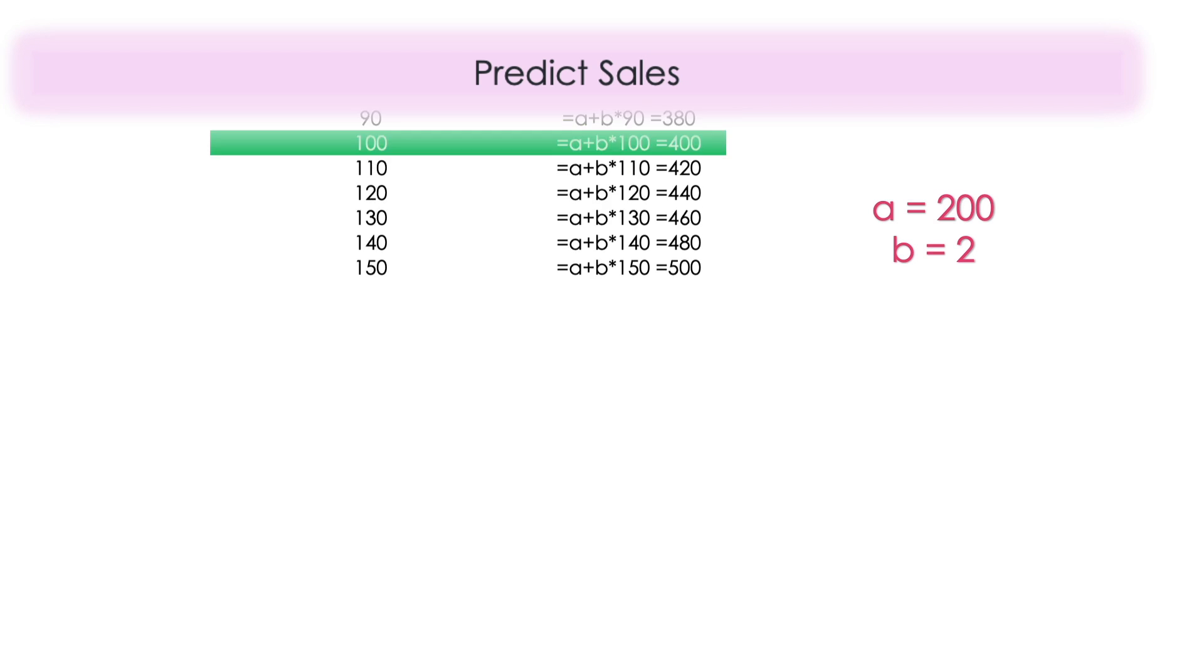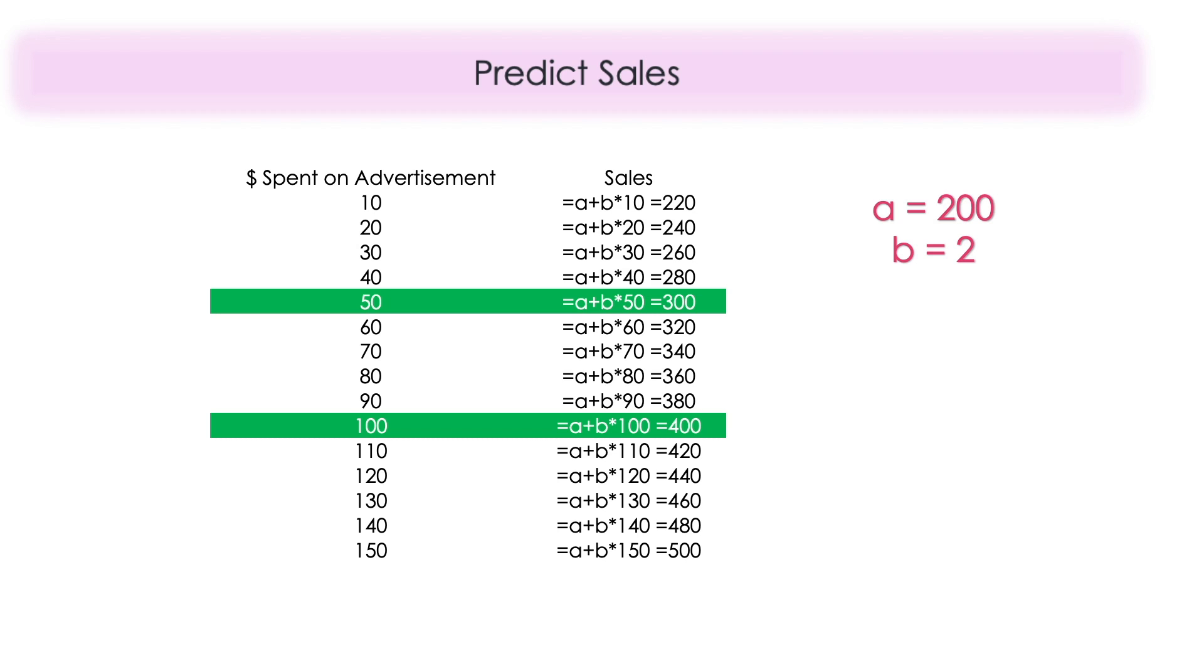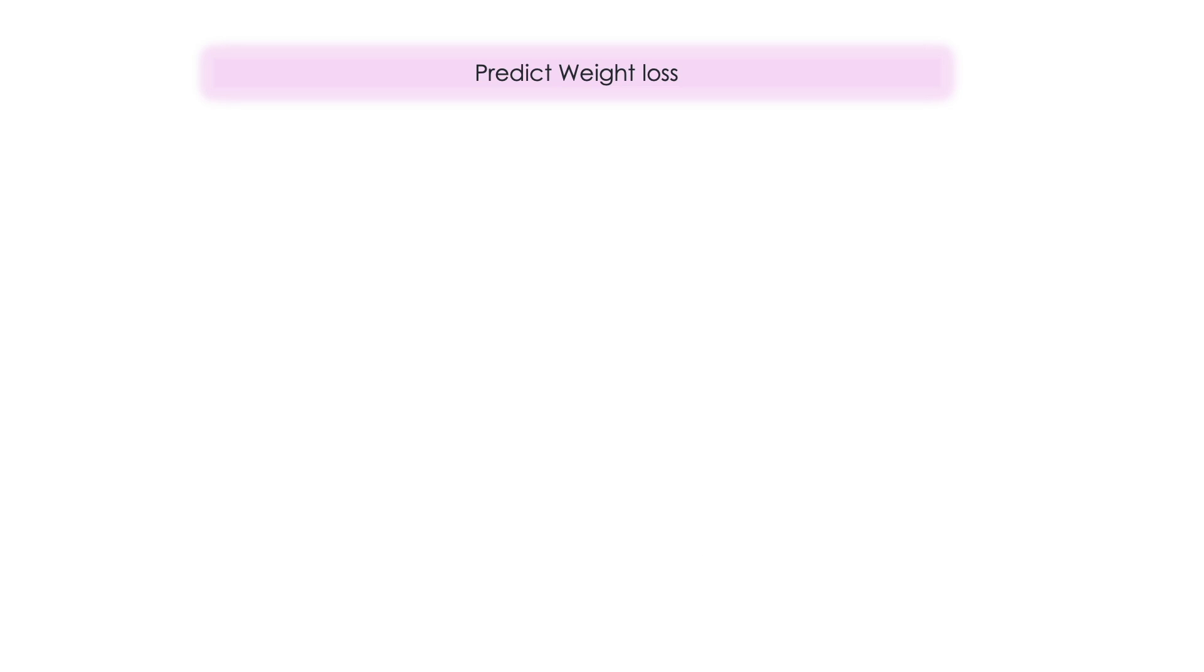Fun part. You think of any amount of money that you could spend on ads and we will estimate the sales corresponding to that. We know a and b and we know the linear relation, so that is all we need, right? So here you go. Now you have a table full of numbers to help you out on your marketing and advertisement decisions.